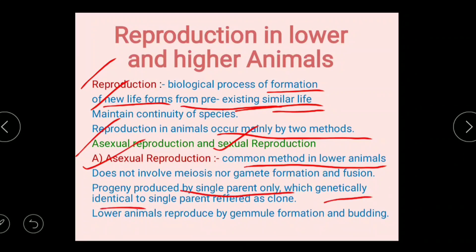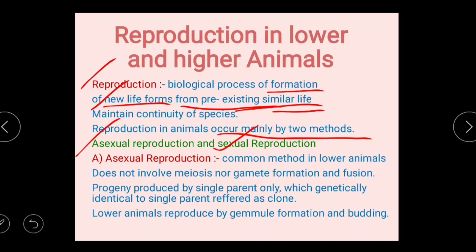Genetically identical means the genetic material of the offspring is the same as their parents, because only a single parent is involved in this type of reproduction. These genetically identical offspring, which are exactly like the parent, are referred to as clones. In lower animals, this type of reproduction occurs by gemmule formation and budding.